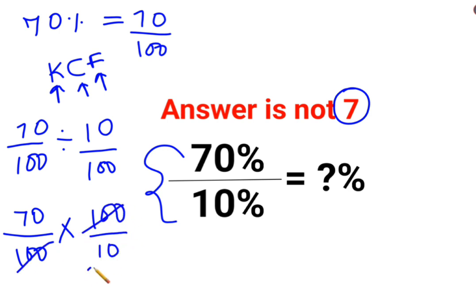So this and this gets cancelled. This is 1s and 7s. Yes, the answer for this one should have been 7.